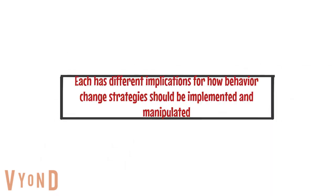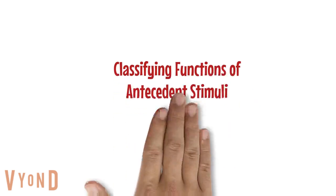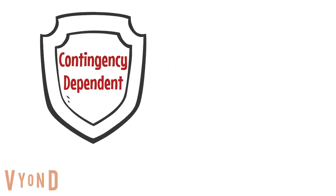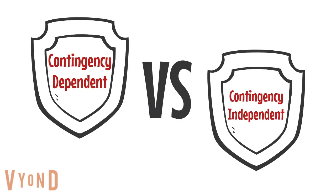Each one — the discriminative stimulus and the motivating operation — have different implications for how they implement behavior change and manipulate the environment. Now we're going to talk about classifying functions of antecedents. There are two different categories for functions of antecedent stimuli.